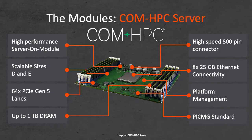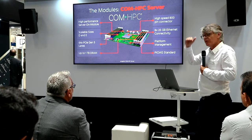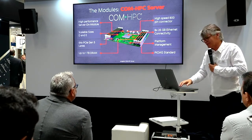On a COM HPC server module, you get PCI Express lanes - one of the most important interfaces on the server side - up to 64 PCIe lanes, up to one terabyte of DRAM, and high-density 800-pin connectors. Ethernet scalability is also very important: 100 gigabits Ethernet is now effectively the standard, bundled as four times 25 gigabits combined to 100. Servers also require remote management - platform management via IPMI or Redfish is part of the specification, implemented in a more compact way suitable for edge servers rather than a full data center.